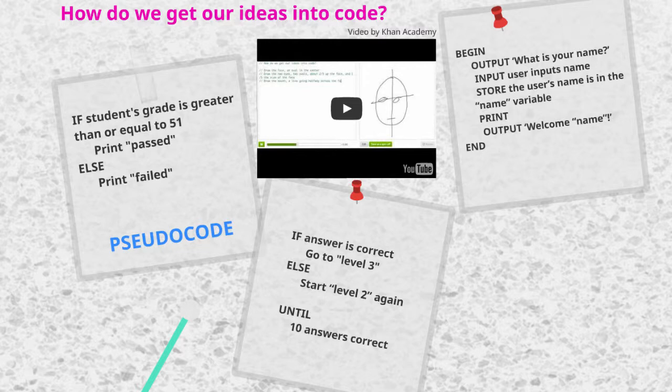Pseudocode is a plain English version of a step-by-step code to be written. It's an informal, high-level description of the computer program operations, or an algorithm. It uses the structural conventions of a programming language, but it's intended for human reading rather than for the computer.